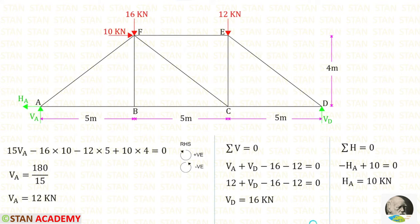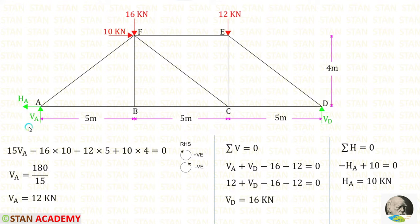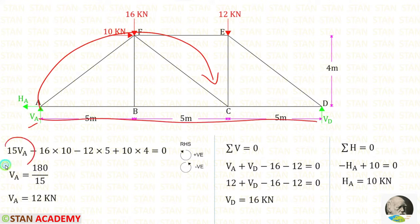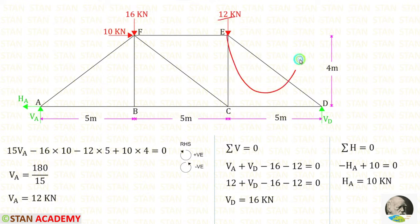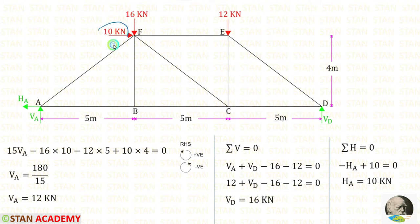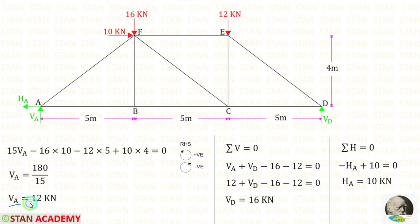Now let us find the vertical reactions. First let us find the vertical reaction VA by taking moments about D. Clockwise will be positive and anti-clockwise will be negative. VA is acting in the clockwise direction, so that will be positive and the distance is 15, so 15 VA. The load 16 kilo newton is acting in the anti-clockwise direction, so that will be negative and the distance is 10. The load 12 kilo newton is also acting in the anti-clockwise direction, so that is also negative and the distance is 5. The horizontal load 10 kilo newton is acting in the clockwise direction, so that will be positive, and the perpendicular distance is 4. After calculation, VA equals 12 kilo newton.